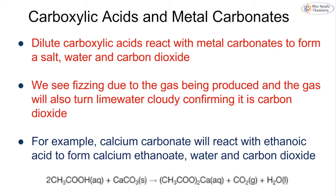Dilute carboxylic acids also react with metal carbonates in the same way as all other acids, forming a salt plus water plus carbon dioxide. We would see a colourless solution because we can't necessarily see the salt, and we'd observe fizzing or effervescence due to the gas. We can confirm the gas as carbon dioxide because it will turn lime water cloudy or milky. For example, calcium carbonate reacting with ethanoic acid forms calcium ethanoate — note the metal is at the end — as well as water and carbon dioxide. You can be asked to write out equations like this, so please practise.